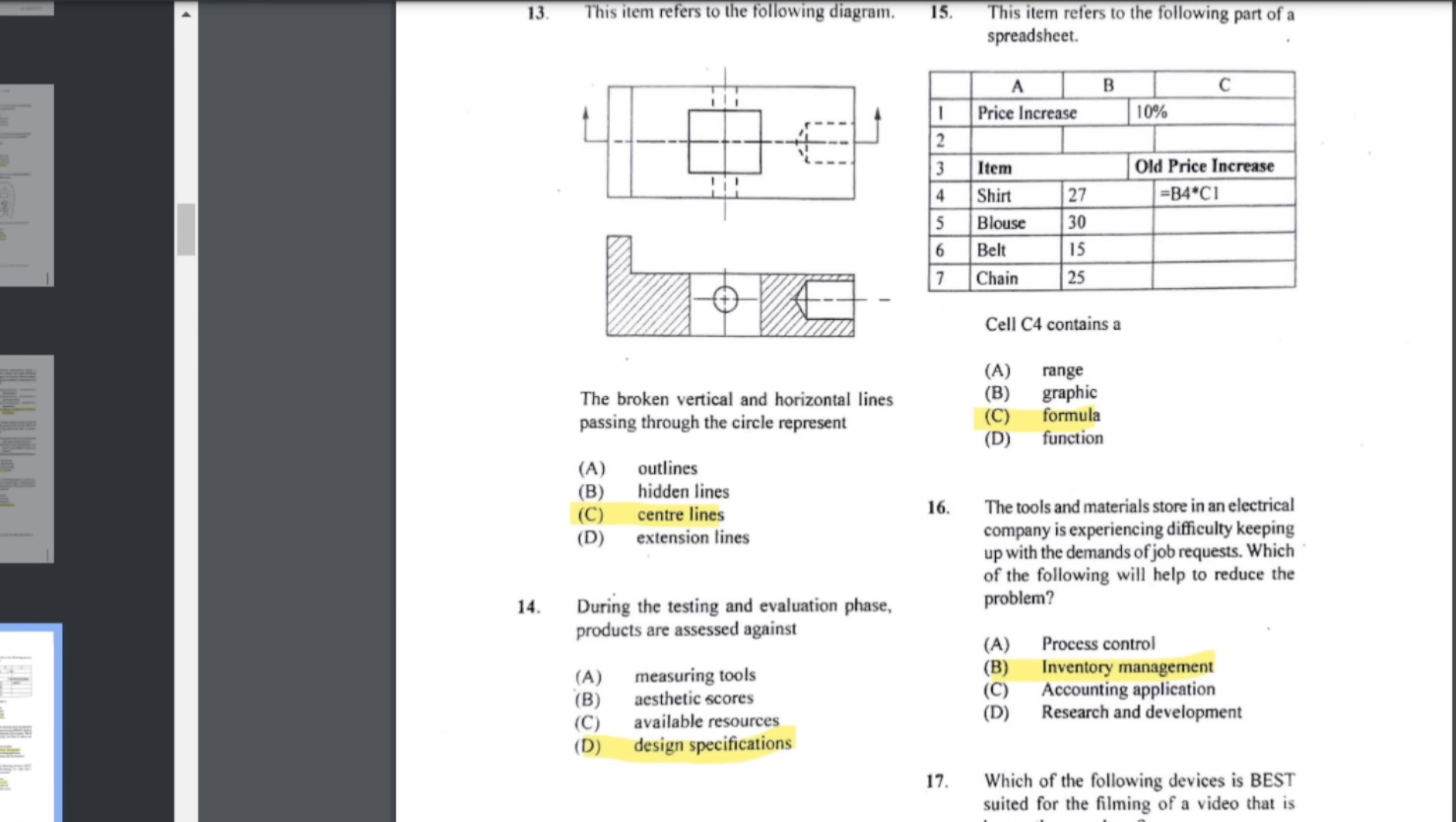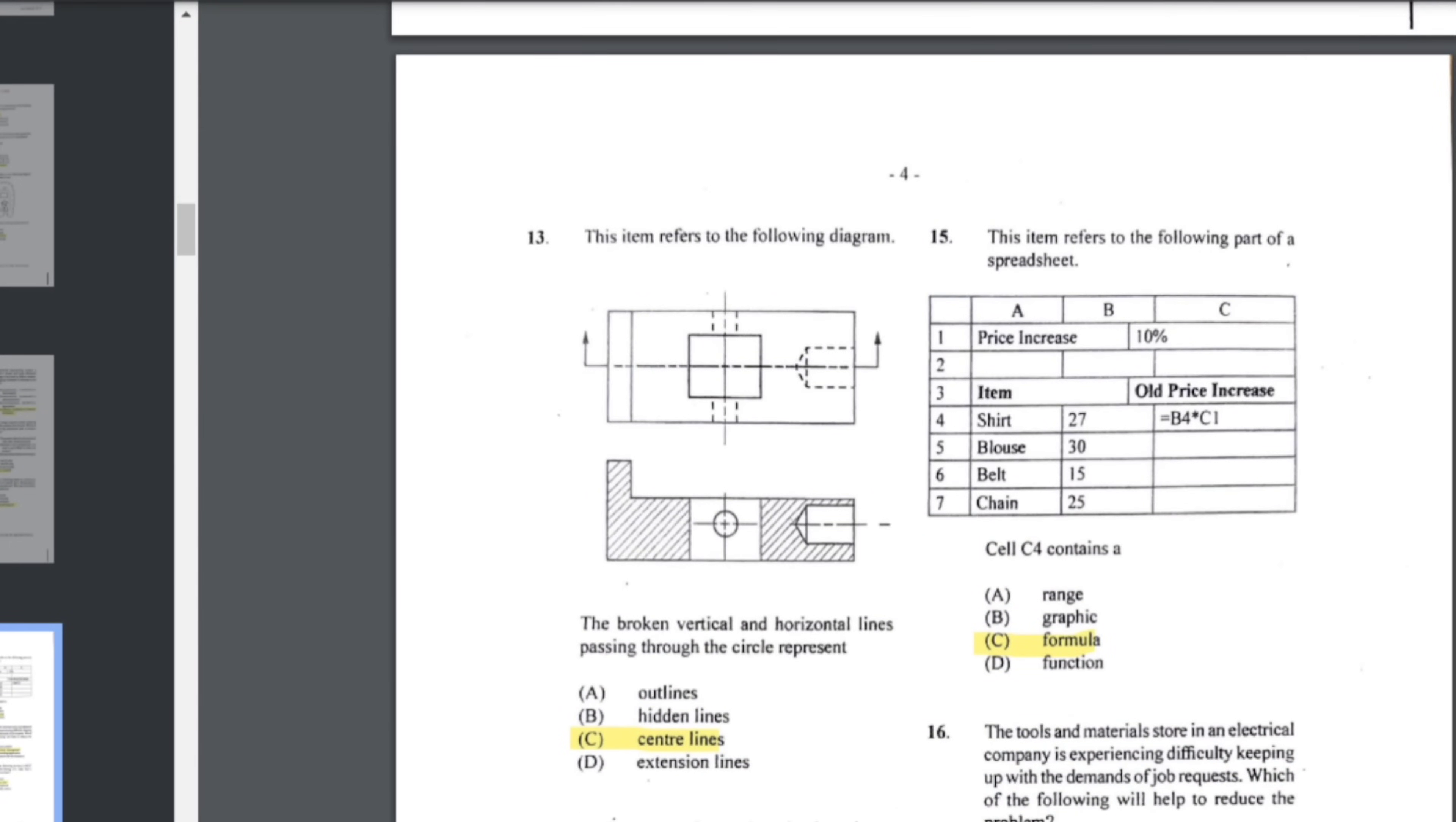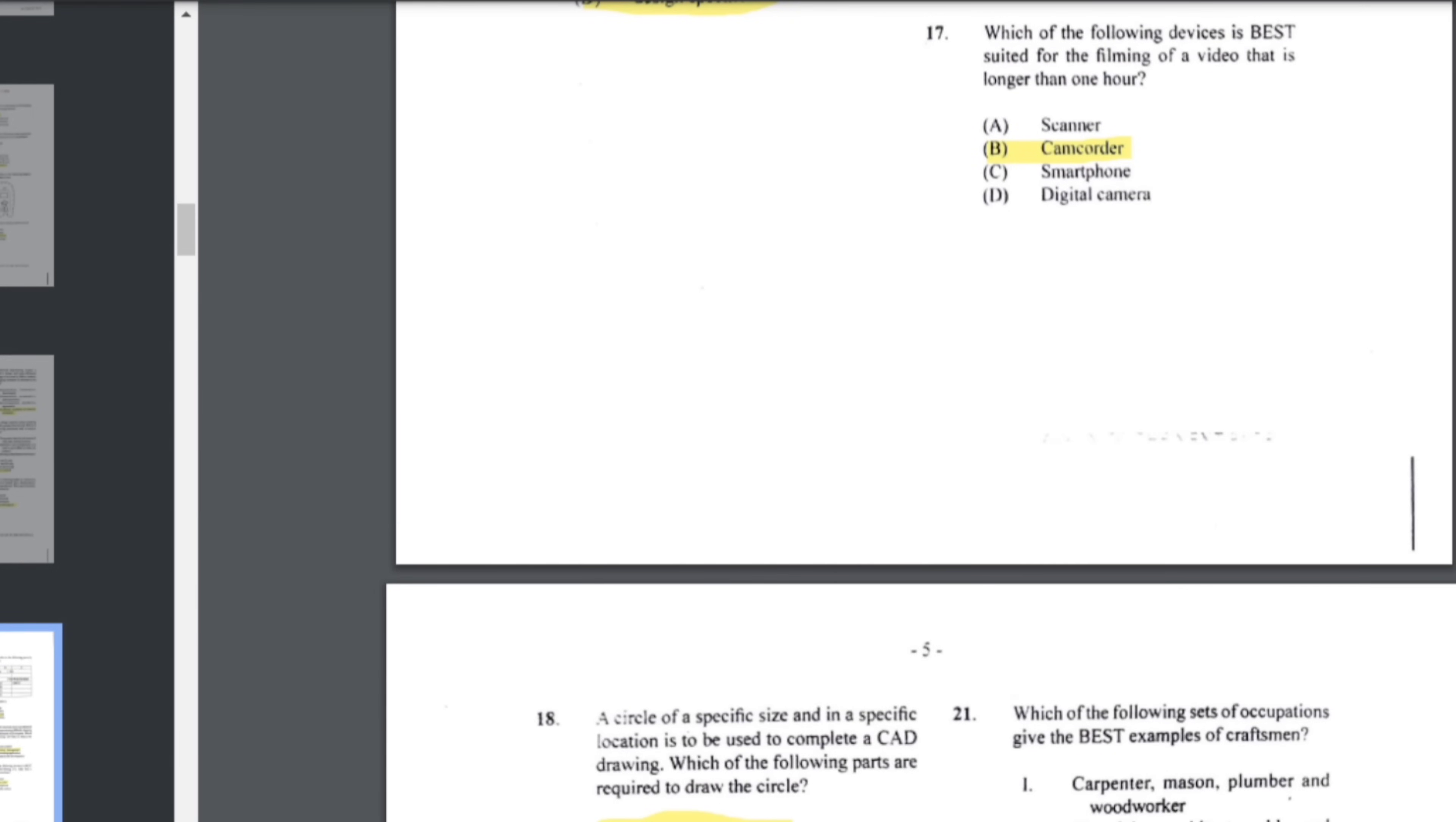Number 13: this item refers to the following diagram. The broken vertical and horizontal lines passing through the circle represents what? It represents a center line. Number 14: during the testing and evaluation phase, products are assessed against what? Against the design specifications to see if they meet those different specifications. Number 15: this item refers to the following part of a spreadsheet. Cell C4 contains a formula. Number 16: the tools and materials store in an electrical company is experiencing difficulty keeping up with the demands of job requests. Which of the following will help to reduce the problem? Inventory management.